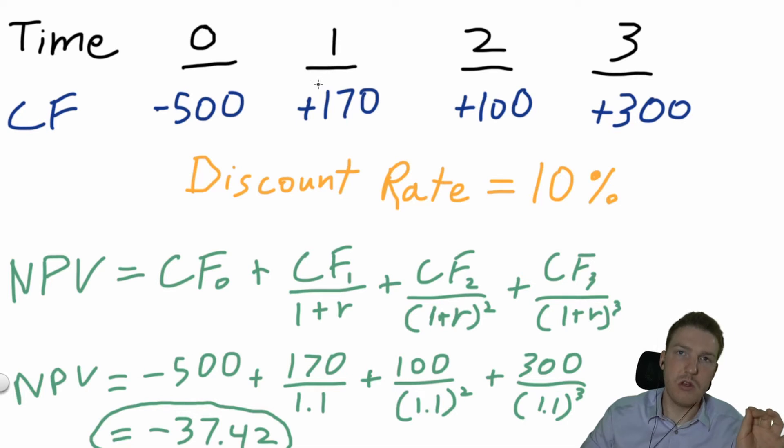In the first year, you're assuming it's going to make you $170. In year two, you're assuming it's going to make you $100. In year three, maybe you'll sell that property and your total cash flow for that year will be $300.